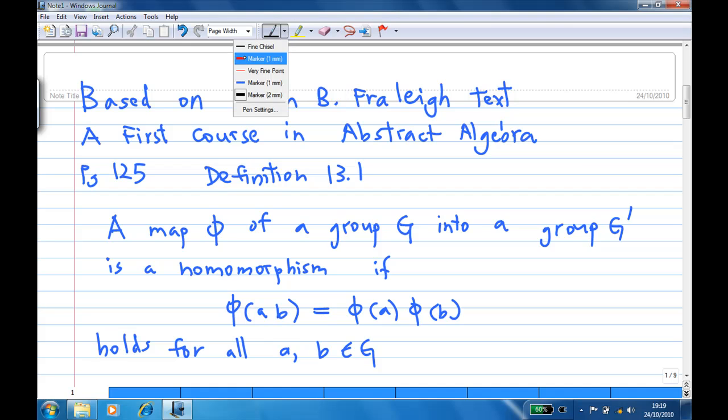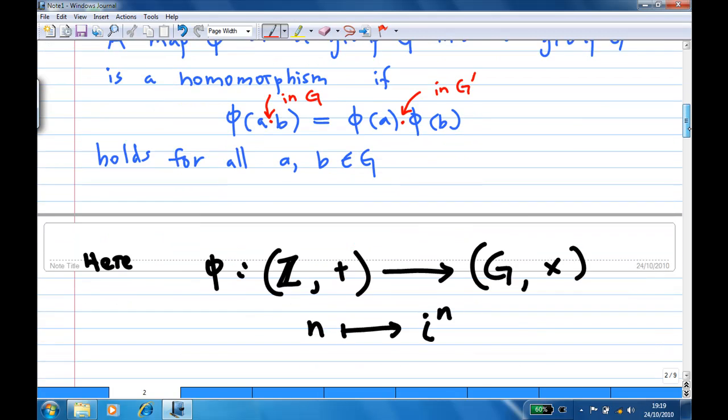Now, I must emphasize that there is a multiplication here. This is a multiplication in G, where a and b are in G, so this is a binary operation in G, whereas there is also another binary operation here. This is a binary operation in G prime. In our case,